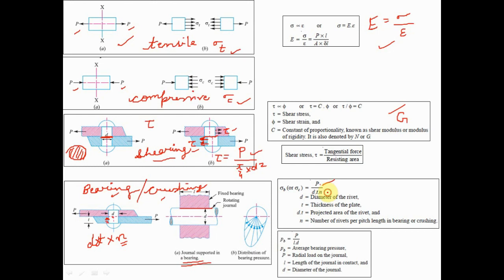In machine design, diagrams are given in 2D but you must visualize in 3D. Crushing happens along the shaded area on both sides: the length is t and the depth is d, so the total projected area when viewed from the side is t × d. This 3D visualization is key to correctly calculating projected areas.